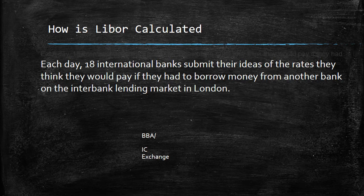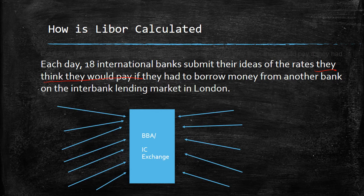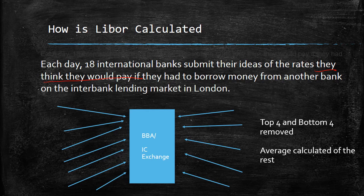The calculation is actually very simple. Each day, 18 international banks in the London market submit their ideas of the rates they think they would pay if they had to borrow money from another bank on the interbank lending market in London. The word 'think' is important — it is their idea of the rate, not something that has actually happened. The BBA (British Bankers' Association), now replaced by ICE, collects these submissions. The top four and bottom four quotes are removed, and the average of the rest is calculated — that is the LIBOR rate.